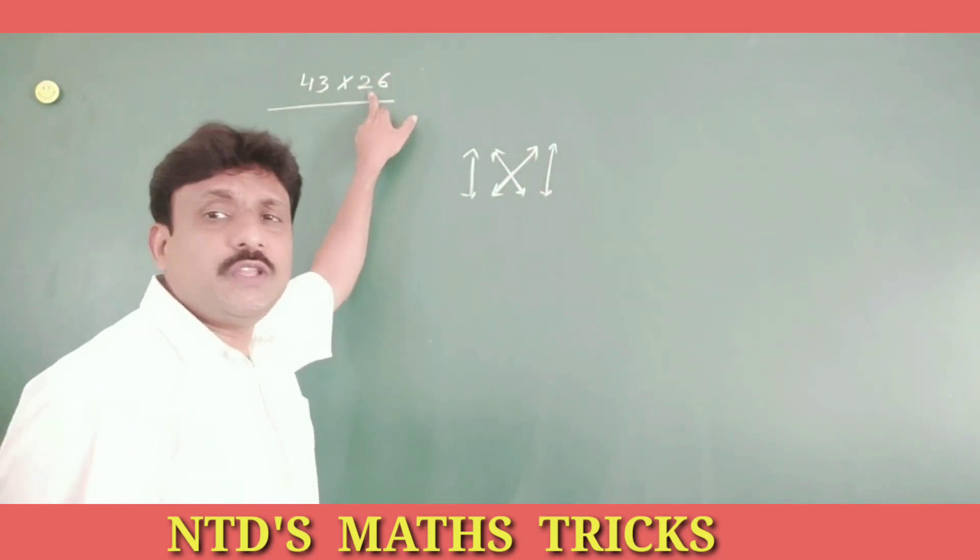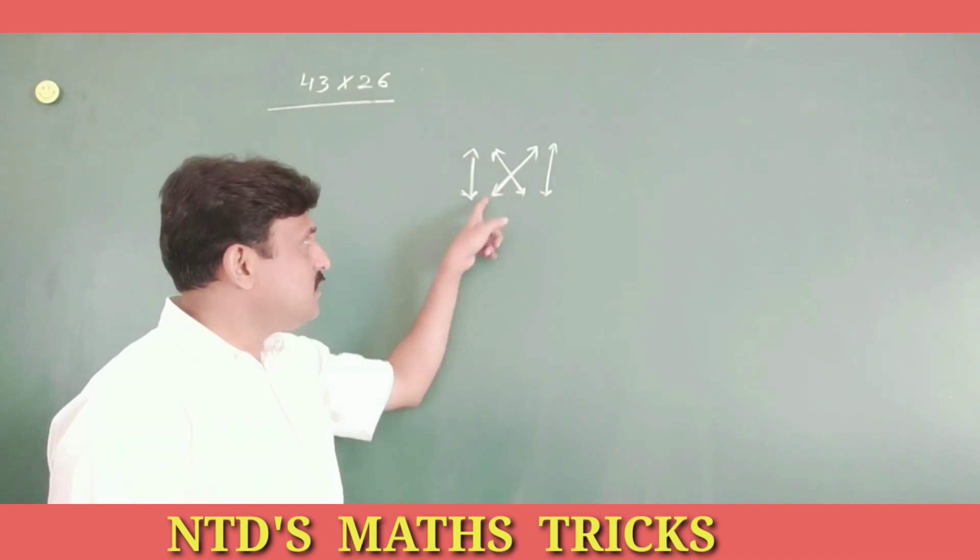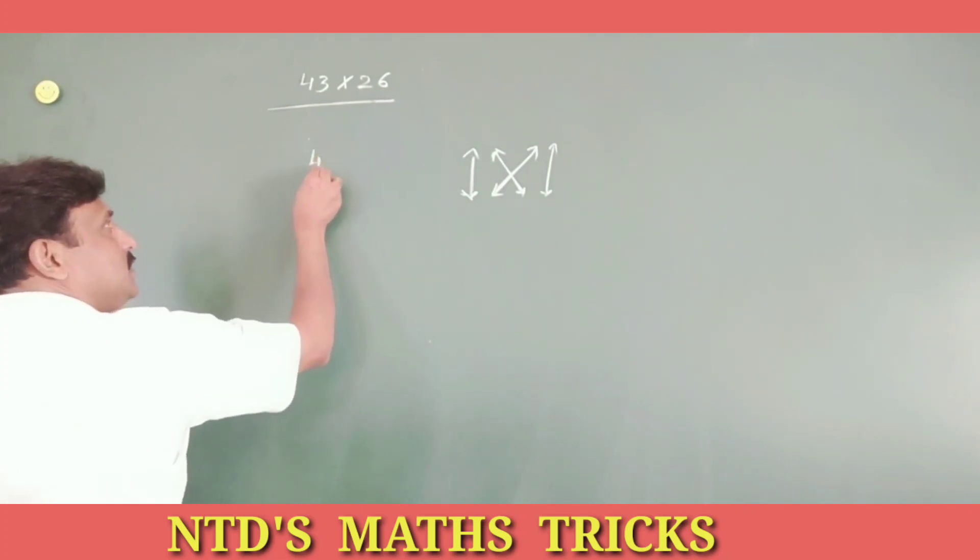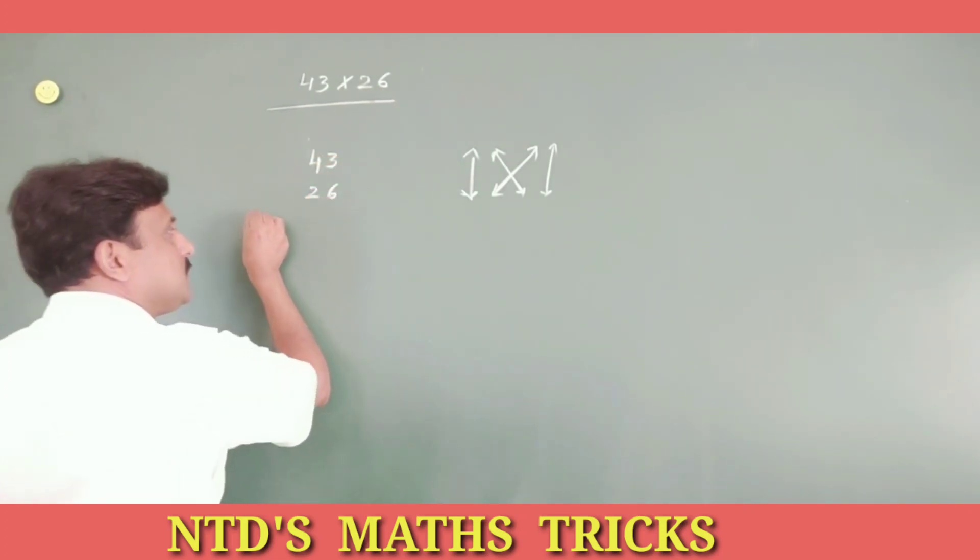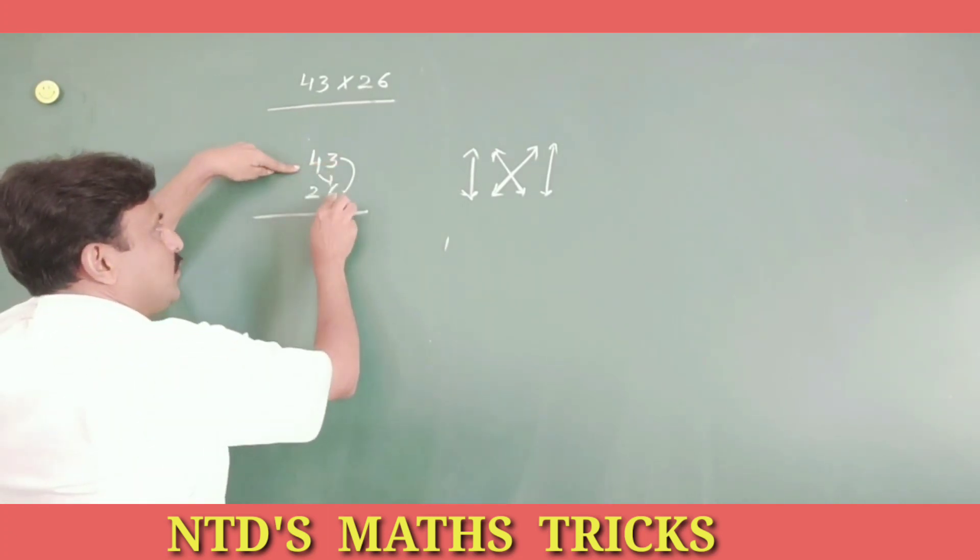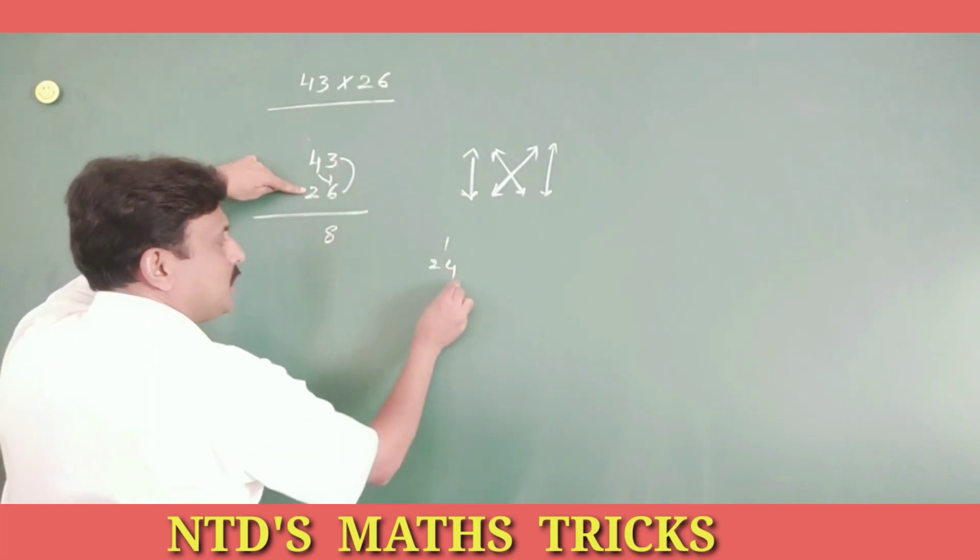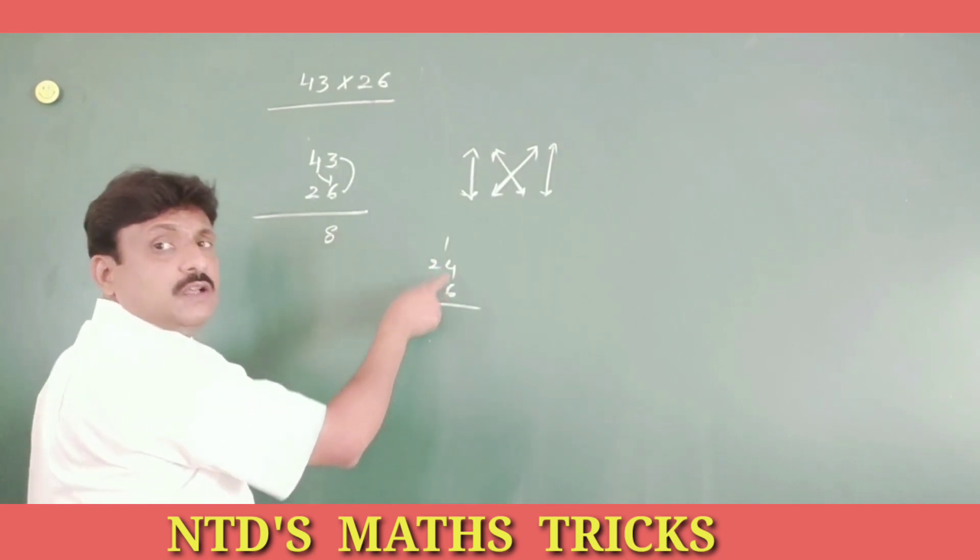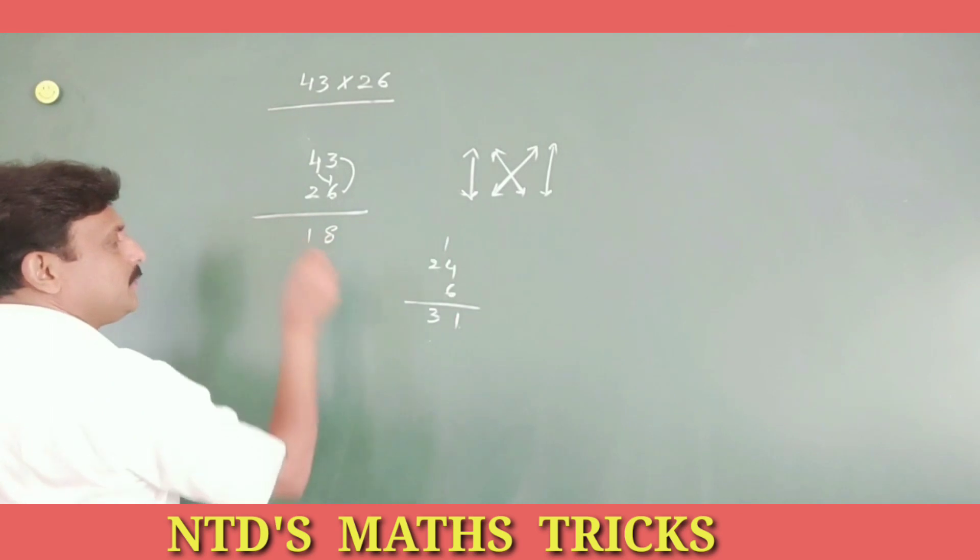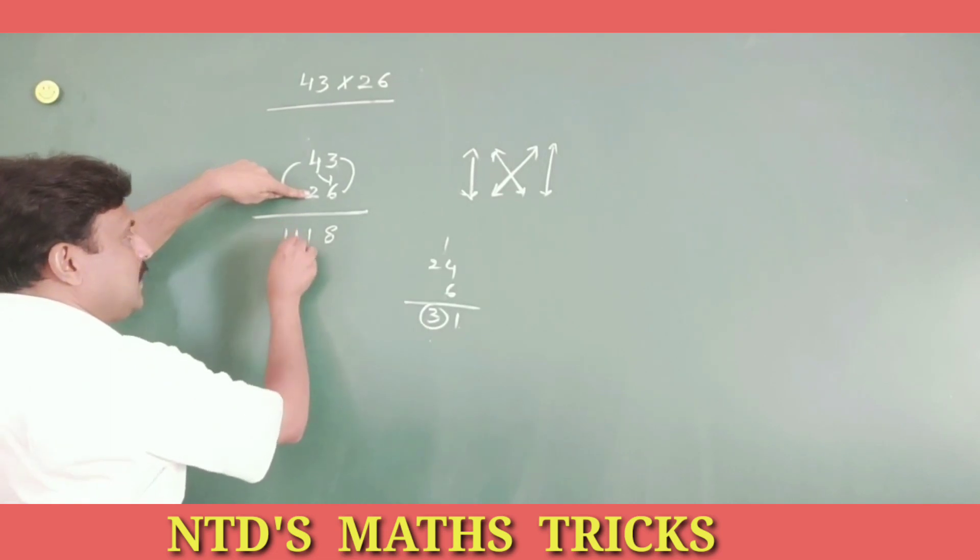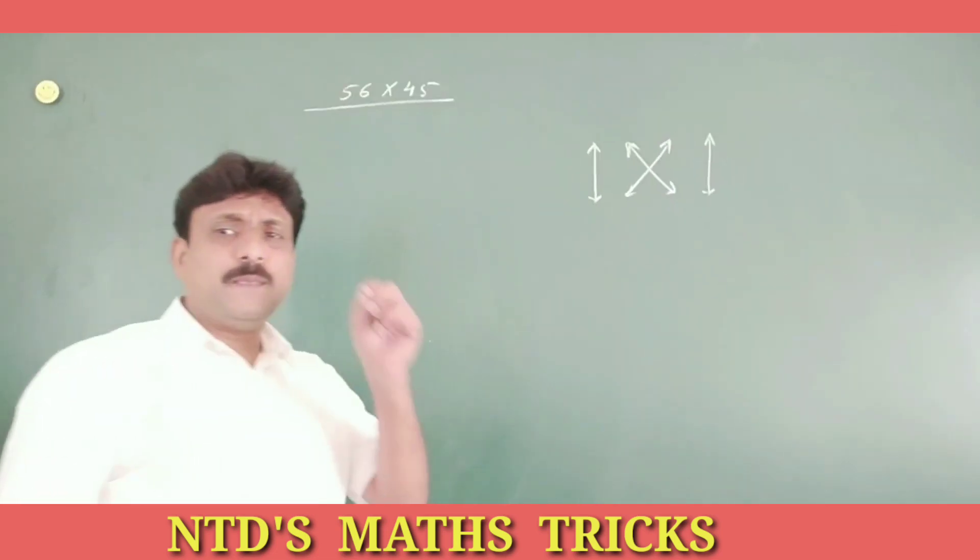43 into 26, so unit place multiplication, cross multiplication, 10 place multiplication. I will write 43 into 26. Unit multiplication, 6, 3s are 18, 1 carry. Cross multiplication, 4, 6s are 24, 3, 2s are 6, add this carry. Cross multiplication, 24 plus 6, 30, 30 plus 1, 31, write 1, 3 carry. Now multiplication, 10 plus 4, 2s are 8, 8 plus 3, 11. So 1118.